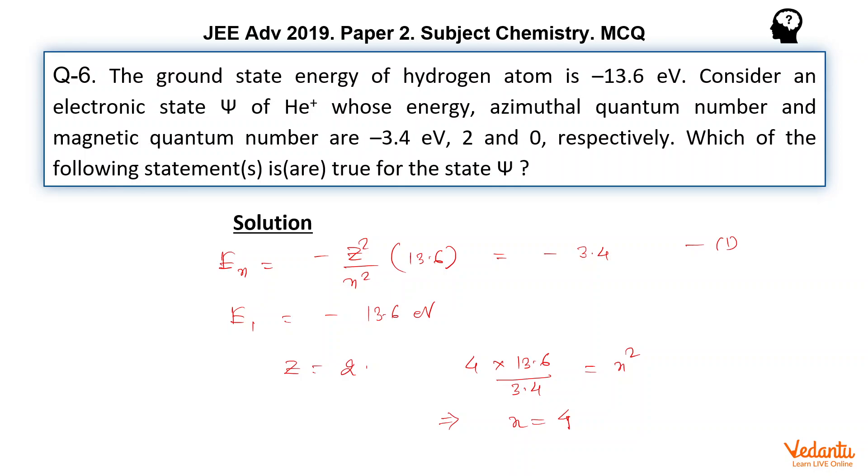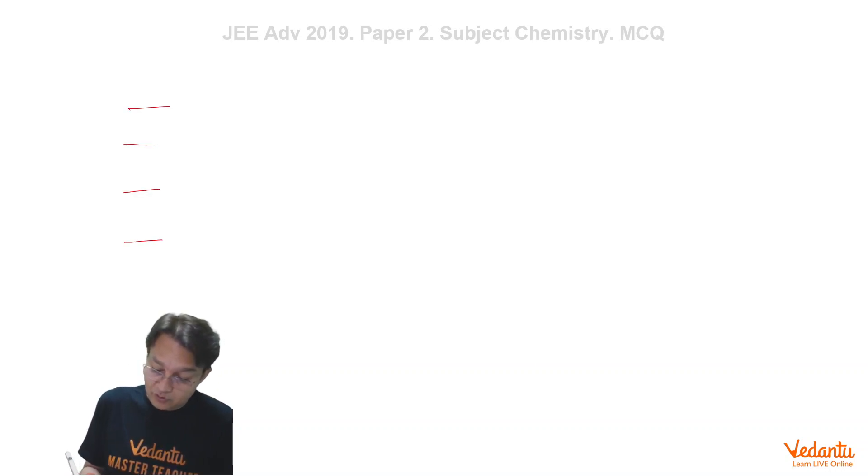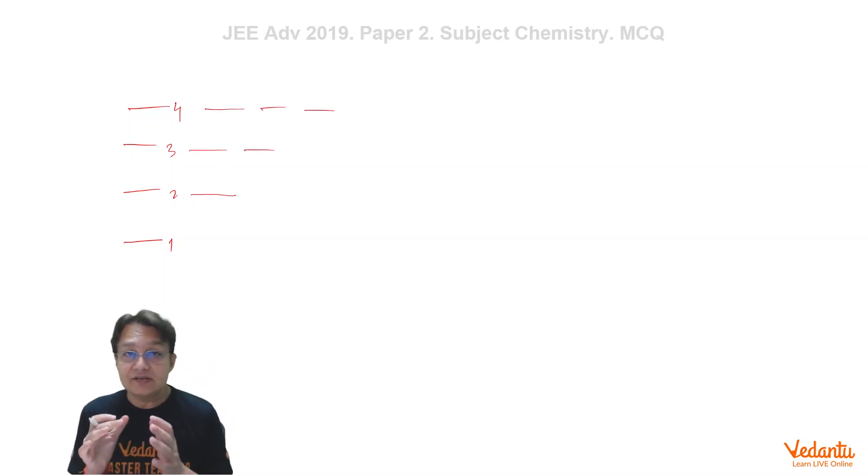So once we get N is equals to 4, if N is equals to 4, that simply means that it belongs to the fourth state. And in the fourth state, another very important concept is there, that in one state there will be one subshell, in 2 there will be 2, in 3 there will be 3, and in 4 there will be four subshells. Even if it is H-like species, these subshells will be there.